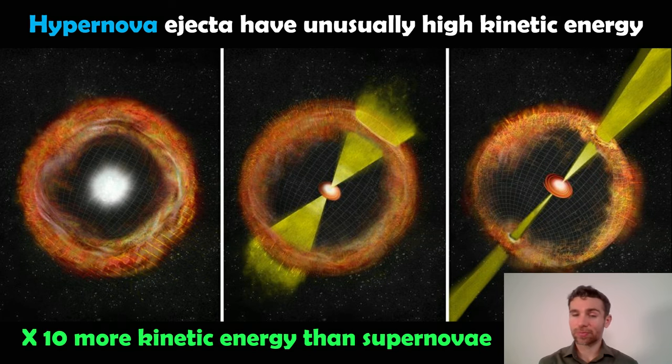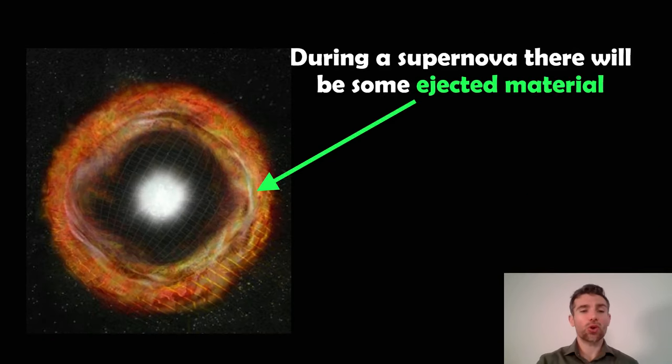Why does that happen? During a supernova, you get ejected material. That's what then creates those really nice images that we see, like the Crab Nebula or the supernova remnants that we get. So we get this ejected material.